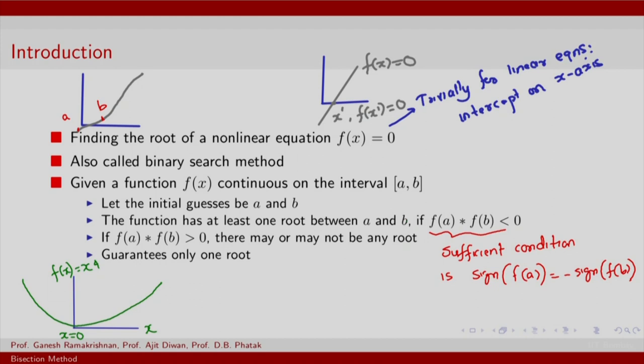Finally, it guarantees finding only one root. So it is possible that a function such as this, let us consider this function. Now it is possible that your initial choice of a and b are such that they cover two roots.